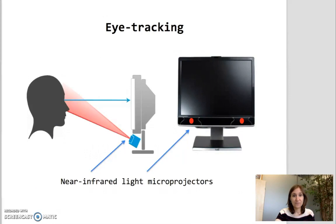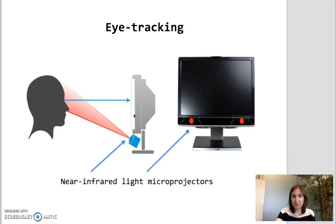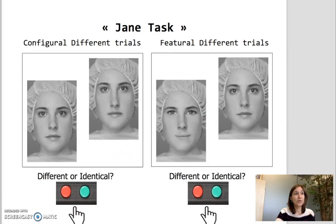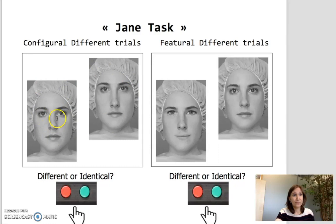This particular methodology gives the opportunity to examine the participants' eye gaze. Thanks to the near-infrared light sent to the retina by microprojectors, the eye-tracking is capable of estimating where on the screen and for how long the gaze of the participant focuses. During this face discrimination task, which we called the Jane task, participants were asked to identify differences between the faces presented on the screen. Faces were modified on a configural level — that means distances between features were changed — or they were modified on a featural level — that means features such as eyes and mouth were changed.